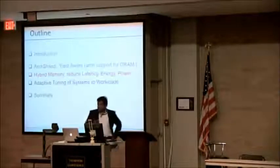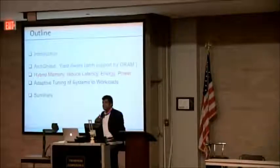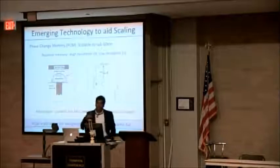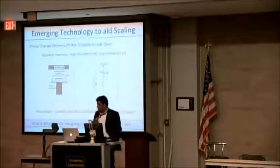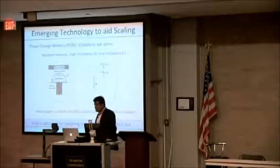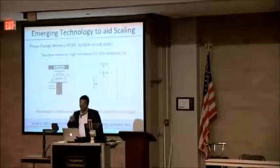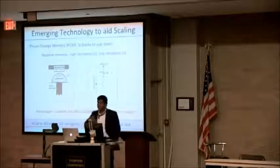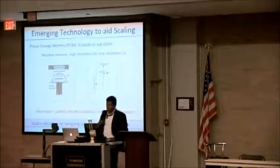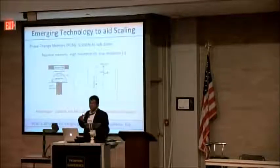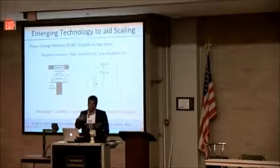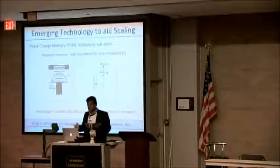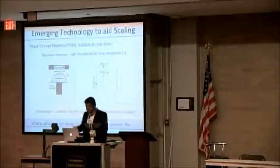The next item is how do we deal with emerging technologies. If DRAM doesn't scale, can we find something that does? There is a technology called phase change memory that is expected to scale below 10 nanometers. It's a resistive memory — you store data in the form of resistance: zero is high resistance, one is low resistance. It can store multiple bits per cell and is non-volatile, so you can save power. A lot of future systems, such as exascale systems, can use PCM memory.